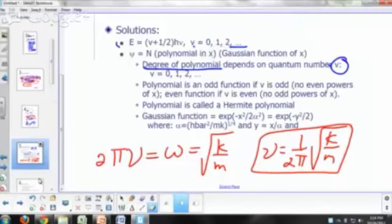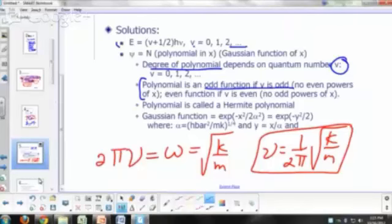So that's the quantum number. Now, your polynomial term, if you examine the wave functions, you'll find that the polynomial term is an odd function if V is odd. In other words, when you write the polynomial out, you're not going to see even powers.